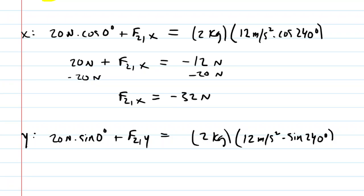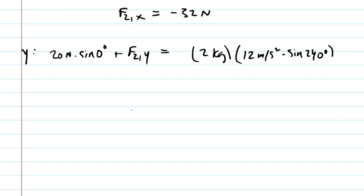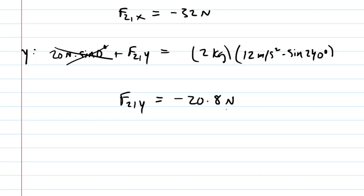In the y direction, 20 times the sine of zero is just zero, so that whole term goes to zero. On the right side, 2 times 12 times the sine of 240 gives the result, and we find that the y component of F2 is negative 20.8 newtons.